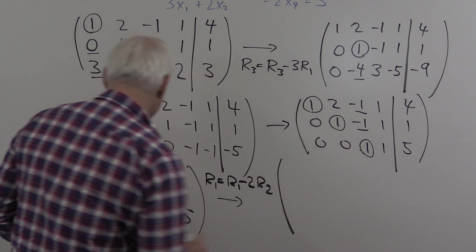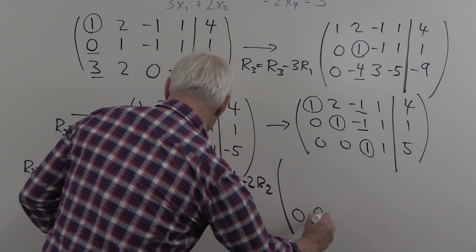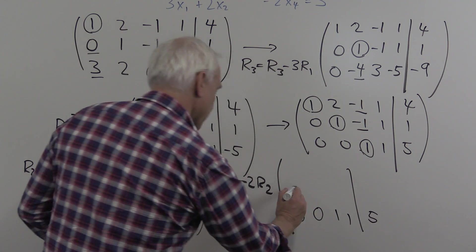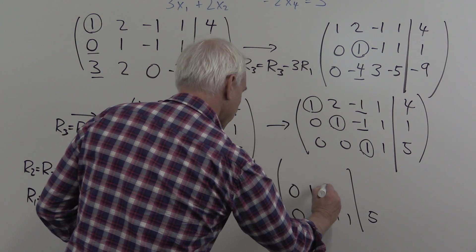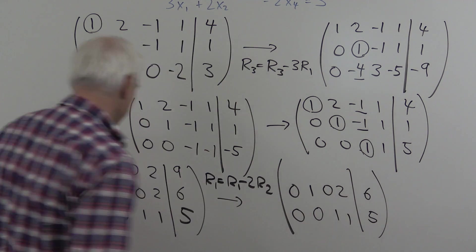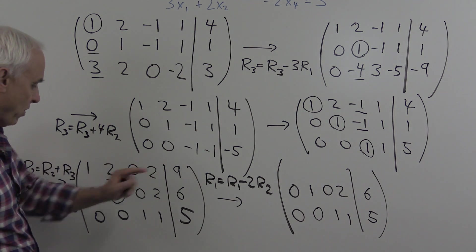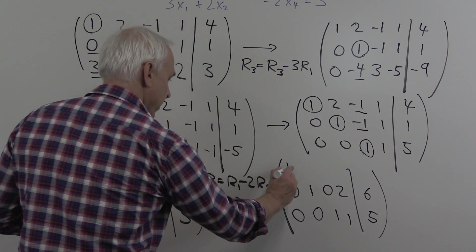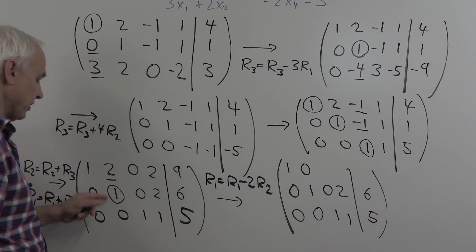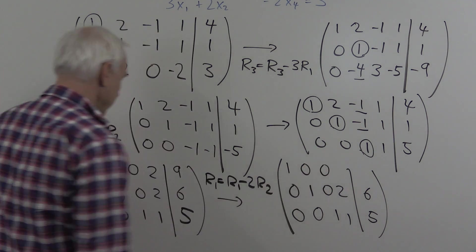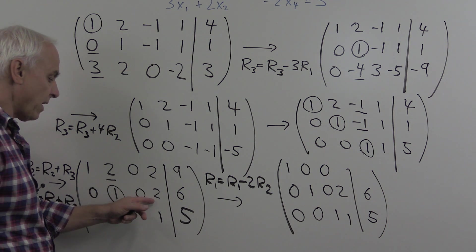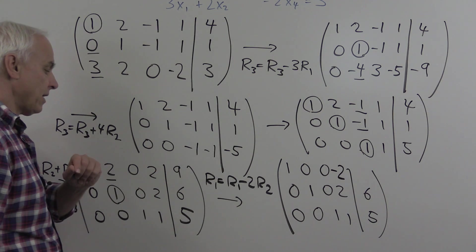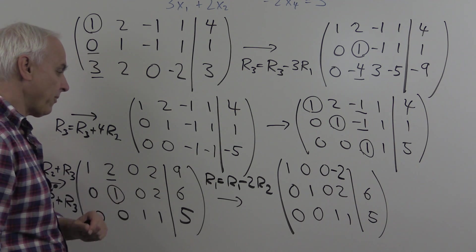That will give us: bottom row is where it is, 0, 0, 1, 1, 5. Second row stays where it is: 0, 1, 0, 2, 6. And our new row 1, taking row 1 and subtracting 2 times row 2, we get a 1 and a 0 because this minus 2 times that. Here we still get 0. This minus 2 times that is minus 2. And 9 minus 2 times 6 is minus 3.